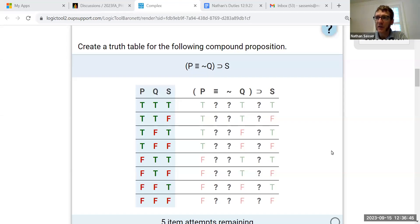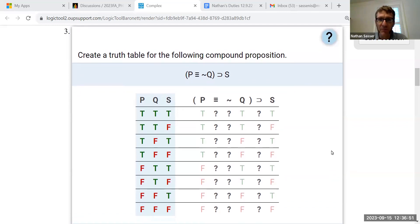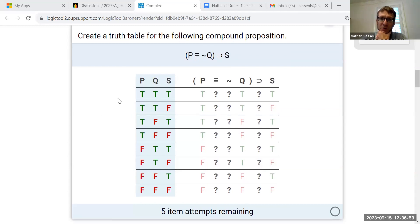Here we are in 7D interactive truth table set number two, problem number three. So here's our standard setup. The question is, which of these logical connectives should I start with?